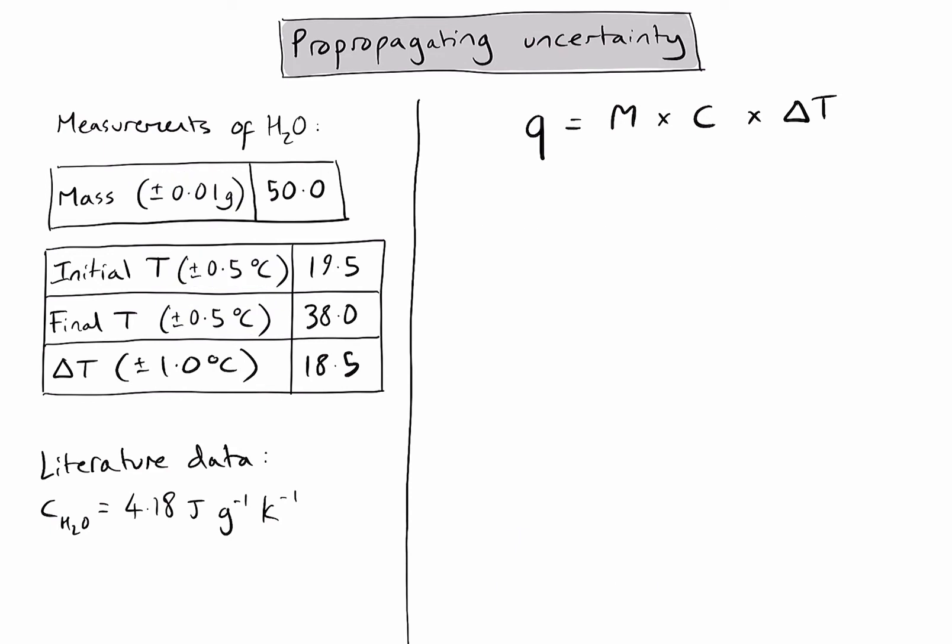I now have all of the values needed to plug into my formula. The mass of water, the specific heat capacity of water from the literature data, meaning I would have to find that, not measure it in a lab, and the change in temperature. You'll notice that for the mass value and for the change in temperature value, we have absolute uncertainties in my table. For the specific heat capacity, because that is data taken from literature and not measured directly in my lab, that value we can treat as having no uncertainty.